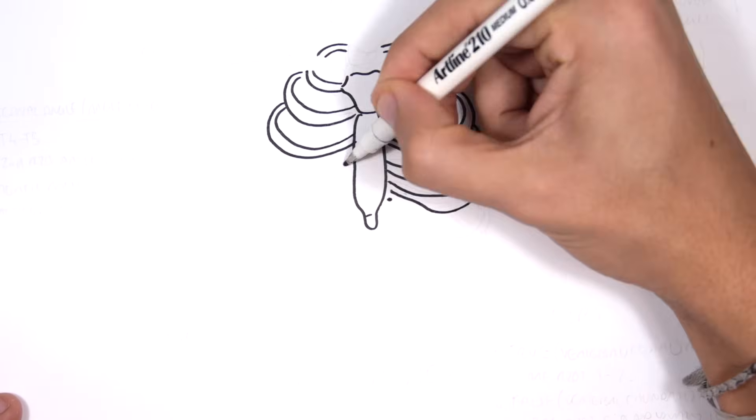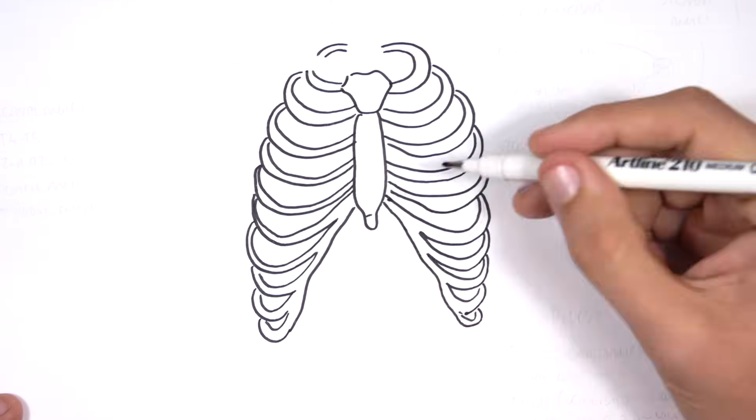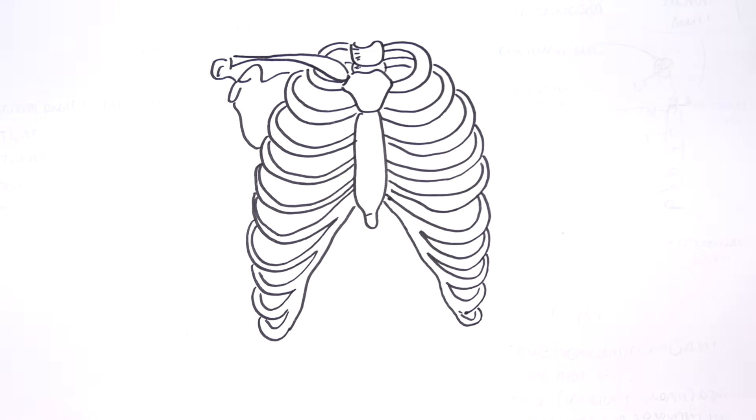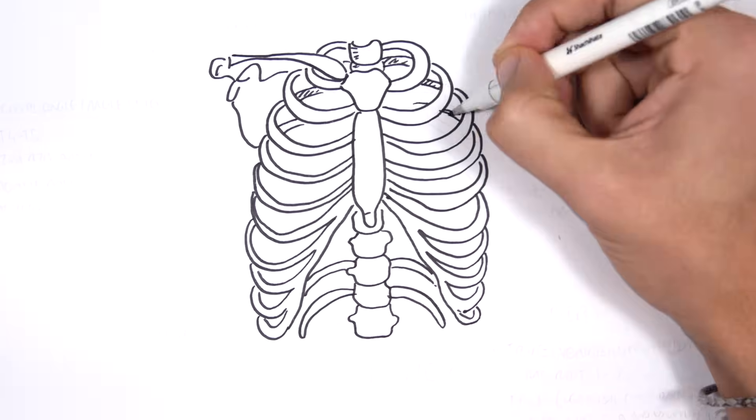Hello, in this video we're going to look at anatomy of the thorax. So here I'm drawing the rib cage, the thorax area from an anterior view.